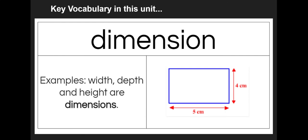Another word we've talked about in this unit is dimension. Dimensions are width and depth and height. When we have an array, we have two dimensions: how wide it is and how high it is. You can see that this rectangle is five centimeters wide and four centimeters high. Those are its dimensions, five times four.